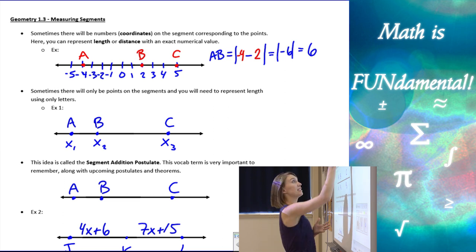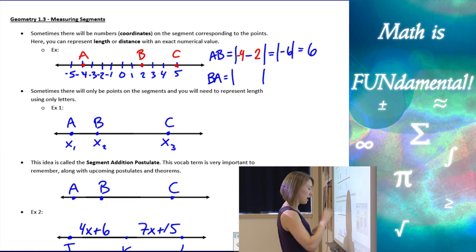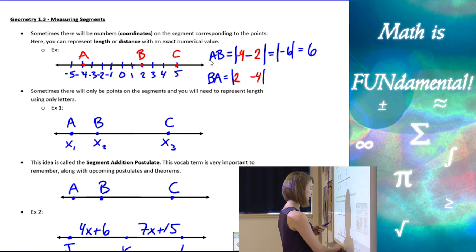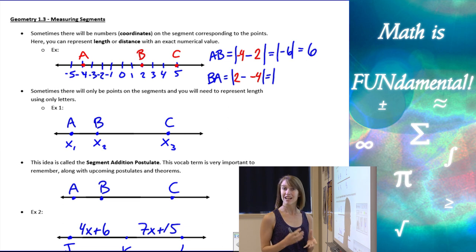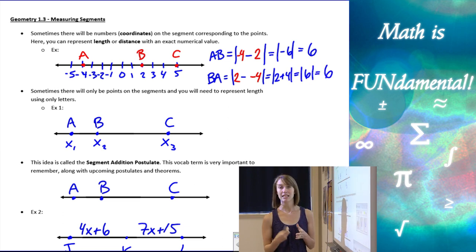We could have done this as BA if we think about length. The length between A and B should be the same as the length between B and A. So now if I did BA, I took the coordinate of B which is 2, and the coordinate of A which is negative 4, and I took the difference of those two coordinates, I would end up with the absolute value of 2 minus a negative 4 which is actually 2 plus 4. 2 plus 4 ends up being 6. So as you can see we have the same distance. We have the same length with our coordinates no matter which direction we go.